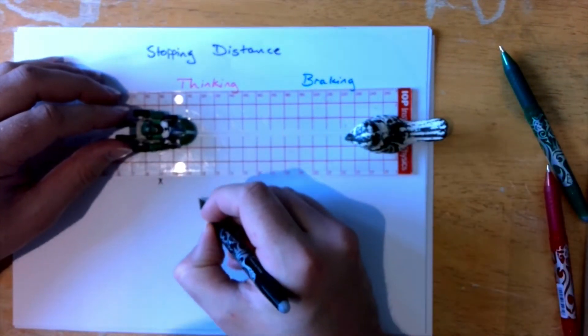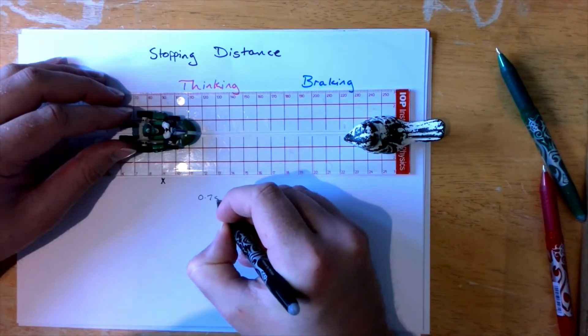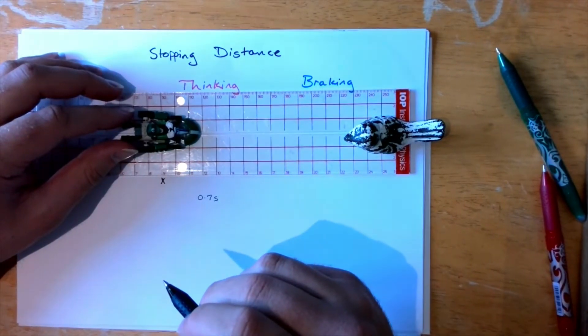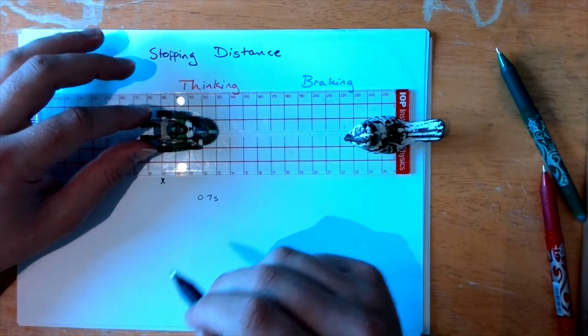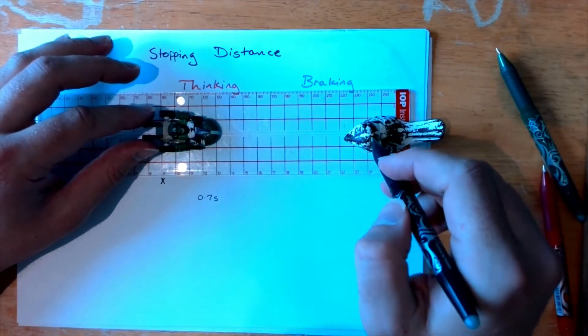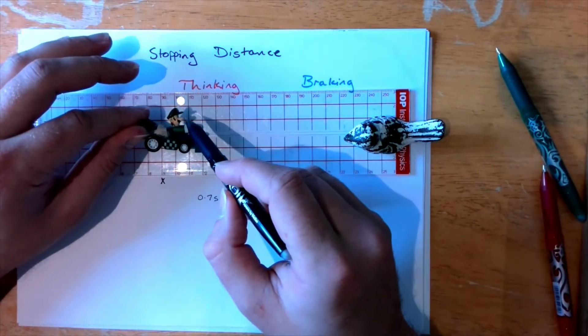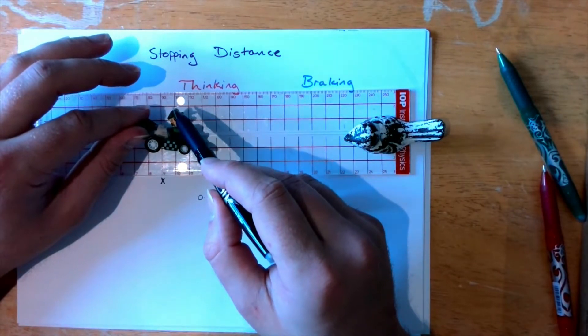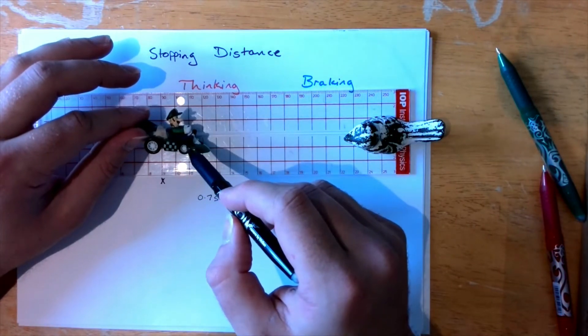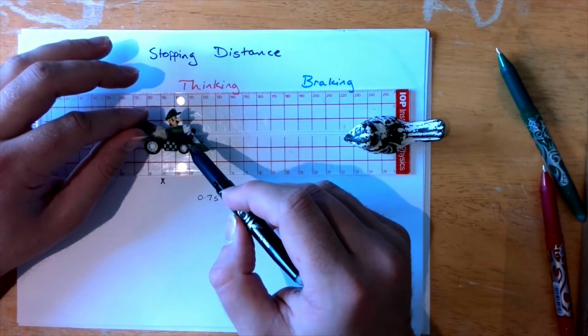The average human reaction time about 0.7 seconds. So we'll be thinking goodness gracious there's something on the road there. I've got to hit my brakes. A message will be sent from the eyes all the way up to the brain and all the way down to the feet that will say right hit those brake pedals please.